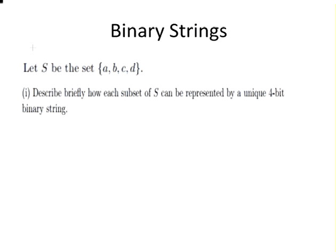So let's look at the first question here. Let S be the set {a, b, c, d}. Describe briefly how each subset of S will be represented by a unique 4-bit string.